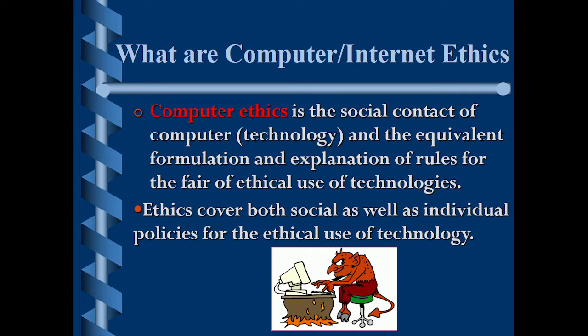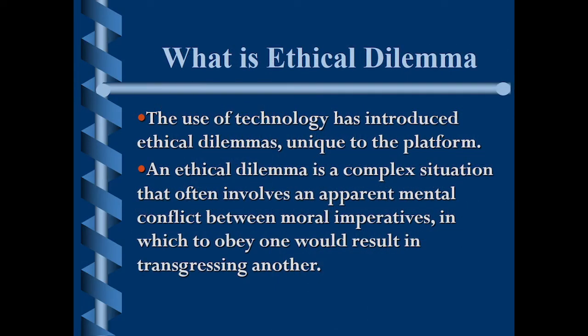The other dimension of understanding ethics is the computer itself. Because if we can't really understand the building blocks of how we can ethically use the computer, then we can't really respect the use of other angles of computers such as networks, information, and internet. Computer ethics is basically a social contract of computer technology — a policy for the fair use of technologies around us. Ethics cover both social as well as individual policies for the greater good of use of technology. Technology always creates some kind of ripple effects in our society, and the use of technology has introduced different dimensions of ethical dilemmas that are very unique.